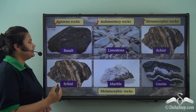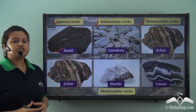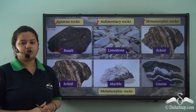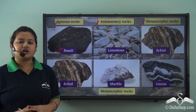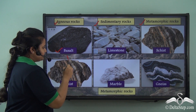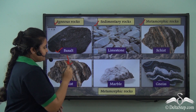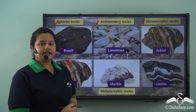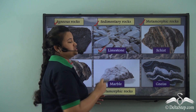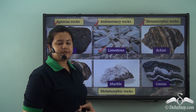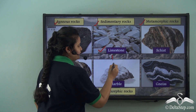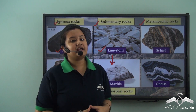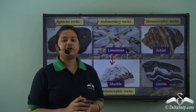Here we have basalt. Basalt is an example of igneous rocks. Basalt gets transformed into schist, which is a type of metamorphic rock. Again, limestone, which is a type of sedimentary rock, gets transformed into marble, which is another type of metamorphic rock.